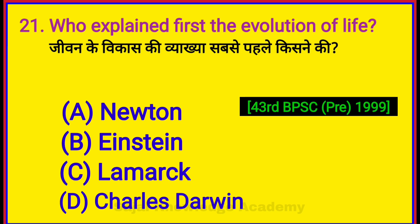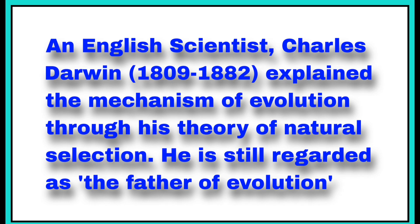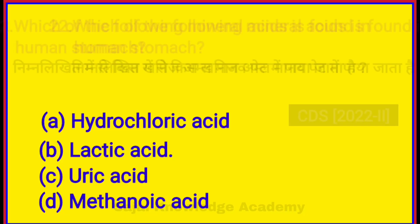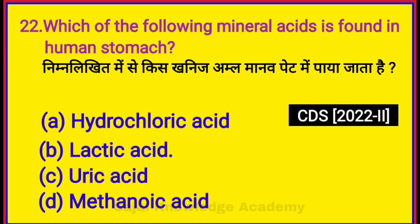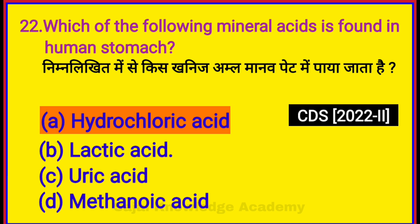Who explained the first evolution of life? Option D: Charles Darwin. Which of the following mineral acids is found in the human stomach? Option A: Hydrochloric acid.